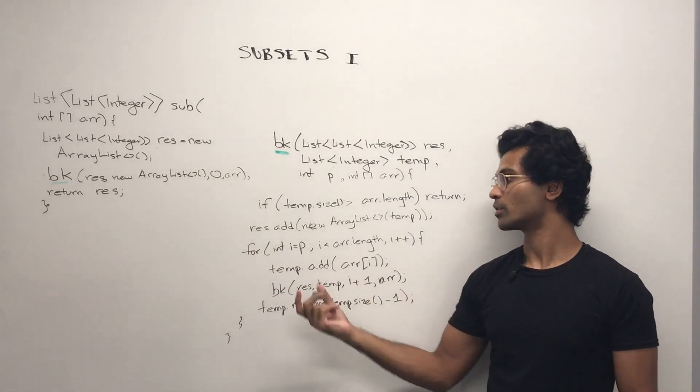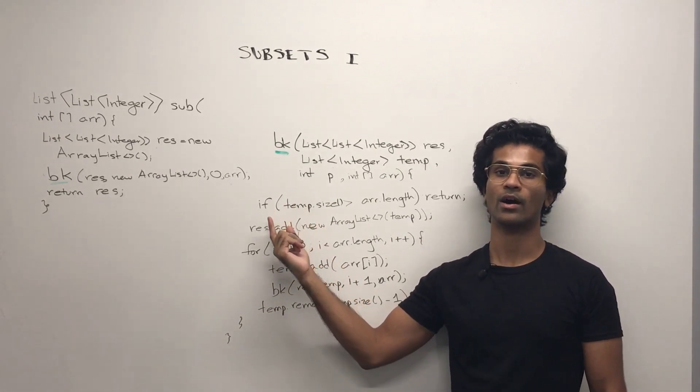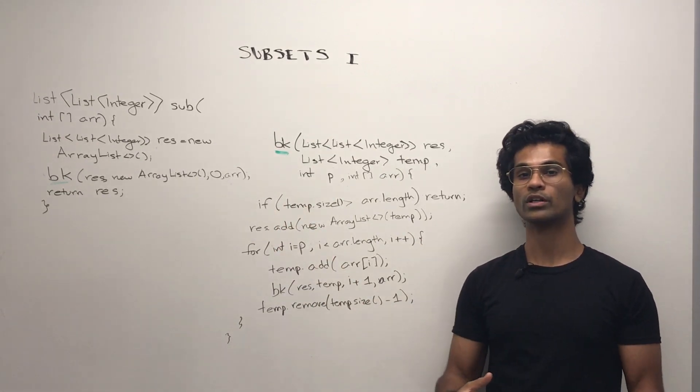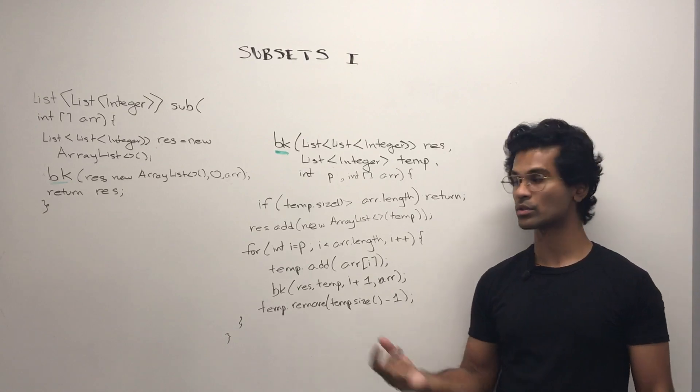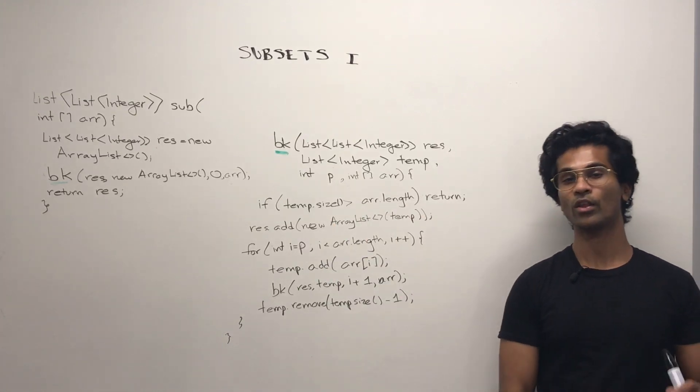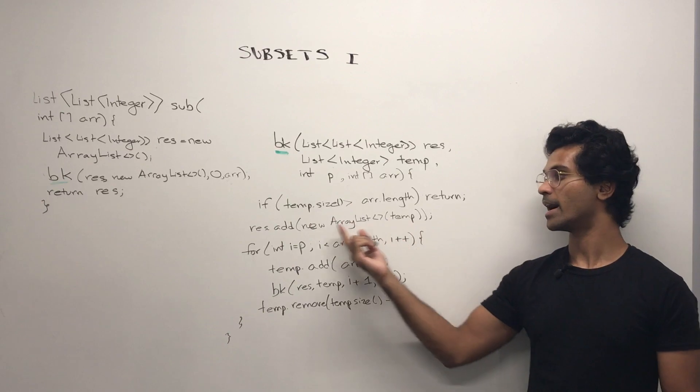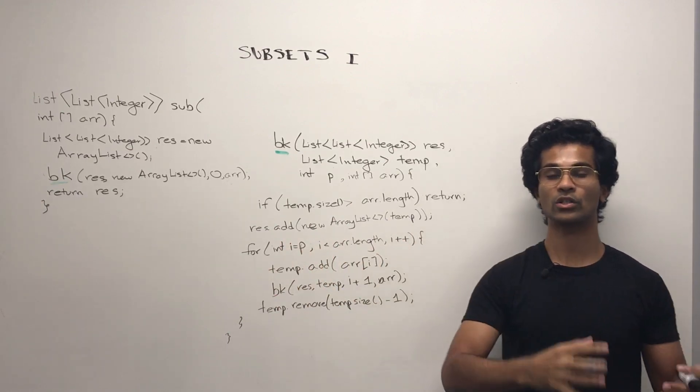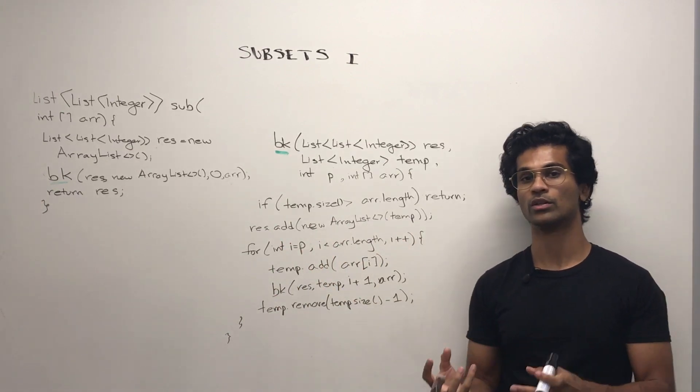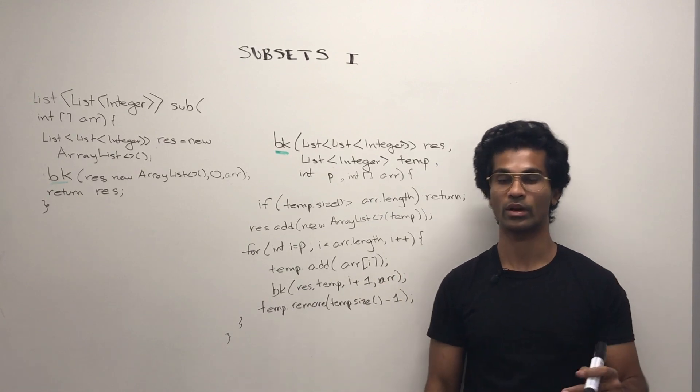Then, once we begin our recursion, first we're going to define our return condition. If we're trying to go out of bounds or we have too many numbers, we immediately return. Otherwise, we're going to take our temporary list and add it to the result. So at each recursive stage, we're going to immediately grab the subset and store it in our result.